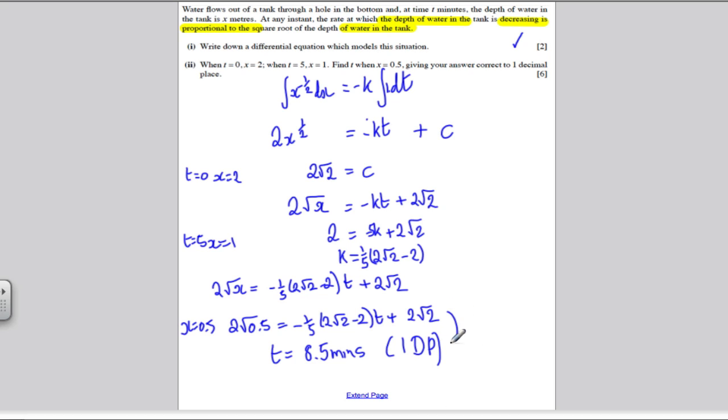Just to remind you how I got from here to here, what I did is I worked out this left-hand side, 2 times the square root of a half. I subtracted 2 root 2 on my calculator, worked that out, and then I divided all of that by minus a half, 2 root 2 minus 2, and that gave me t is equal to 8.5 minutes, correct to one decimal place. Thank you for listening. I hope you found the following useful in your revision in core four.